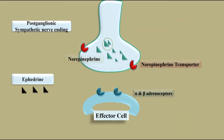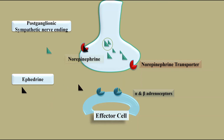Ephedrine, another sympathomimetic drug, not only blocks the norepinephrine transporter, thus preventing further re-uptake of norepinephrine, but it also has the ability to directly stimulate alpha and beta receptors. And therefore, ephedrine and all such drugs are called mixed action drugs.